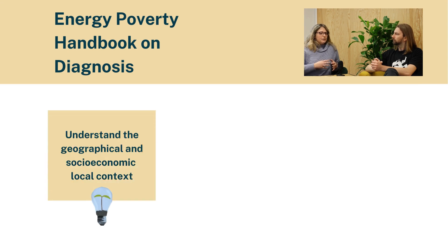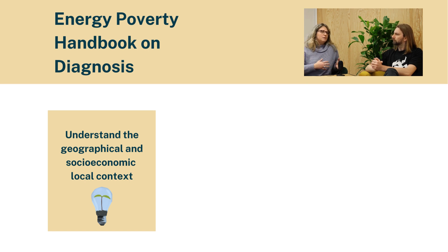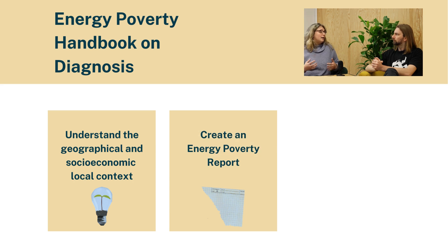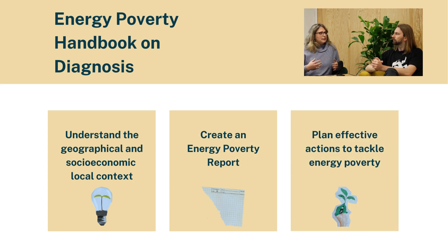The first handbook is focused on diagnosis. Can you explain what an energy poverty diagnosis is? At EPA we believe that the first important thing is to understand what is actually ongoing at your local level. Municipalities can have some difficulties understanding which shapes energy poverty is taking considering the local context, geographical specificity, and socio-economic elements. The diagnosis handbook helps them understand the different elements and create a first analysis resulting in a report they can effectively use to plan their actions to tackle energy poverty.